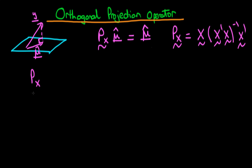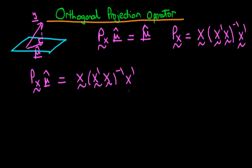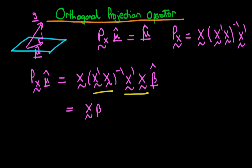If we apply the projection operator to μ̂, we get X(X'X)⁻¹X' times μ̂. But we know that μ̂ is just equal to X times β̂. Looking at this expression, we have the inverse of a matrix times itself, which yields the identity matrix. So we get X times the identity matrix times β̂, which is just β̂. Therefore, the projection operator times μ̂ equals X times β̂, which equals μ̂. The orthogonal projection operator works correctly in this circumstance.